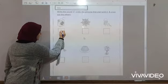And now, write sound J under the pictures that start with it and cross out the others. Look at the first picture. Juice. Juice starts with the sound J. Yes. So, write sound J here. Stick down, turn and drop up.